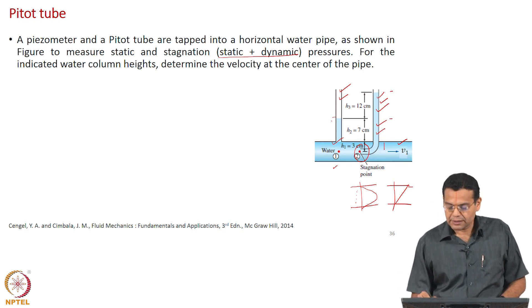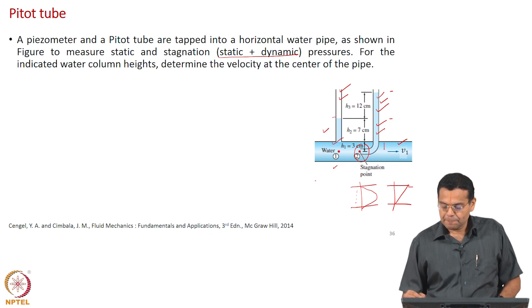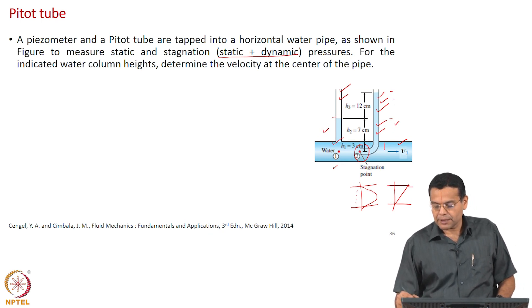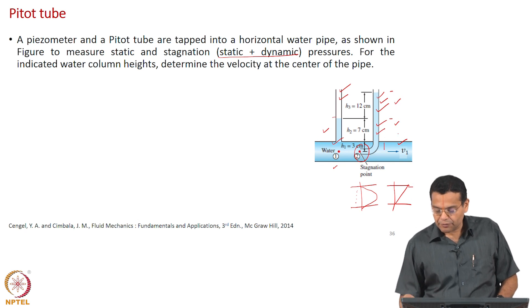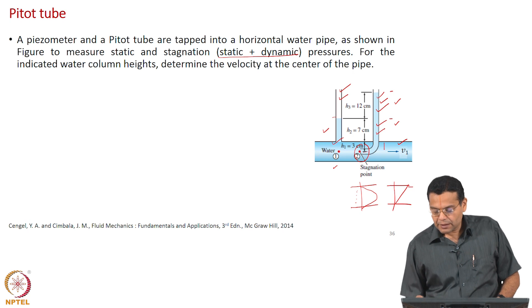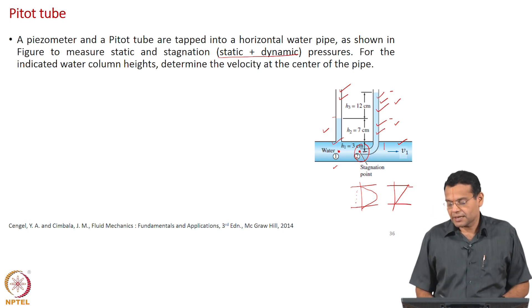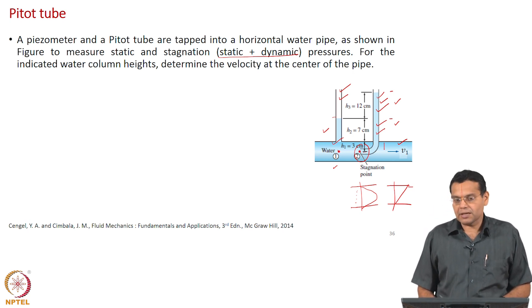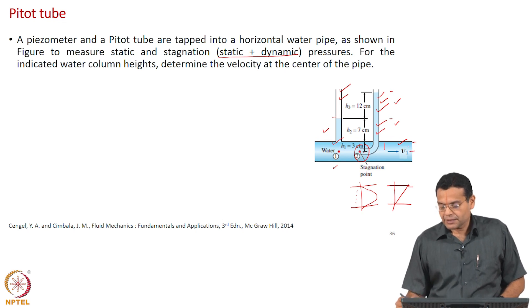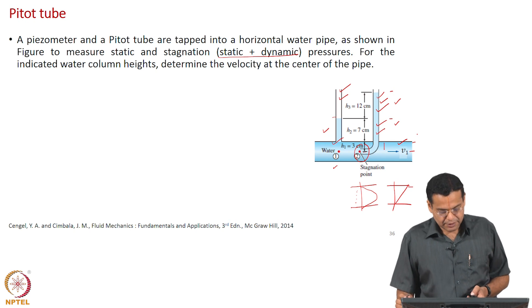Here the water rises to 7 cm, and in the pitot tube the water rises to 7 plus 12 = 19 cm. There is a 3 cm height between the measurement point and the wall — in this case we are interested in measuring the velocity along the centreline, and the distance from that point to the wall is 3 cm.